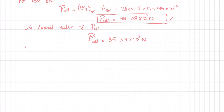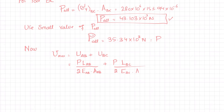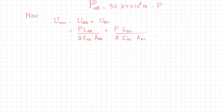The maximum strain energy equals strain energy of rod AB plus strain energy of rod BC. Using P_allowable as P, this becomes: U = (P · L_AB) / (2 · E_AB · A_AB) + (P · L_BC) / (2 · E_BC · A_BC). We have all the values and can substitute them.